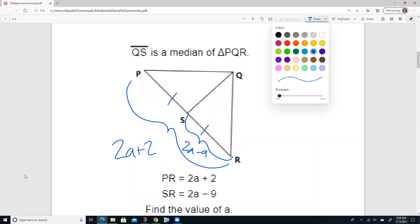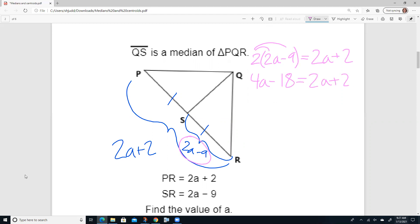Now, are those two things equal to one another? No, but if we doubled this one, they would be equal. So 2 times 2a minus 9 equals 2a plus 2. So let's go ahead and distribute 4a minus 18 equals 2a plus 2.